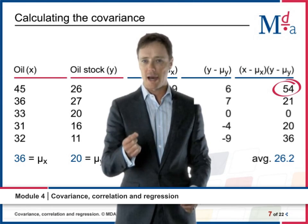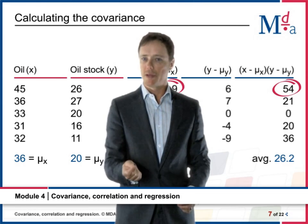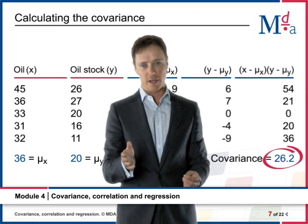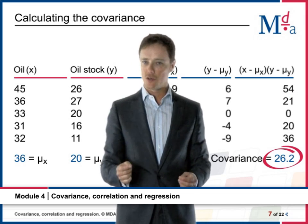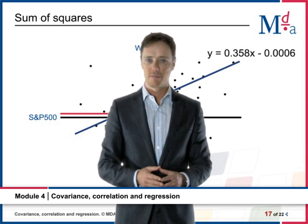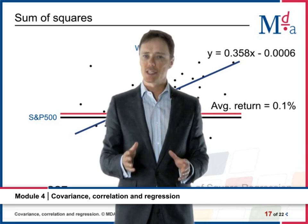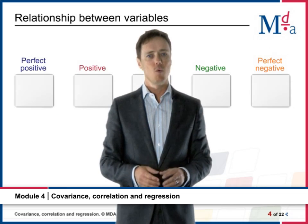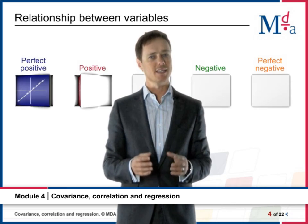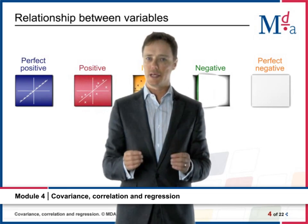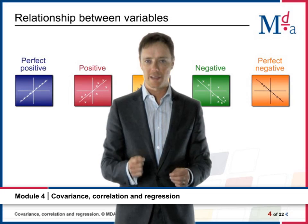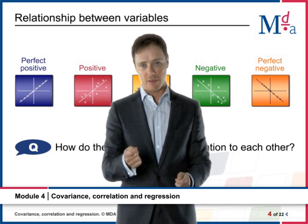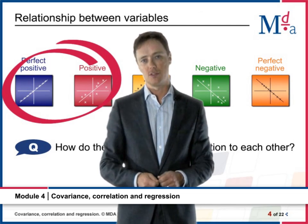And in part four, we teach you how to calculate the covariance and correlation for two sets of data, and we discuss what each of these are. We finish by looking at simple linear regression and use real-life data using Walmart and the S&P 500.